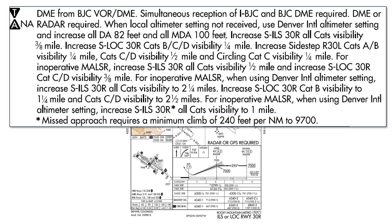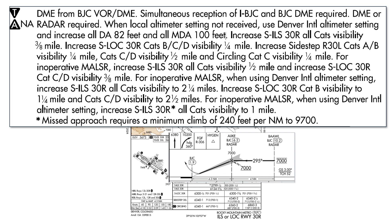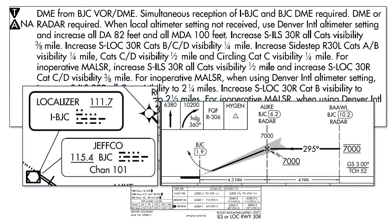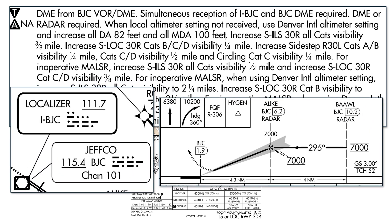First, it's telling us that the DME is coming from the BJC-VOR. This being an ILS approach, the approach course is based off the localizer signal, which is 111.7, but the DME distances — which mark out where the BALNAL fix is, as well as where the missed approach point is — are based off the BJC-VOR, not the localizer.